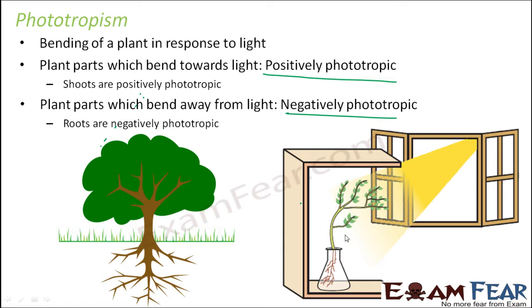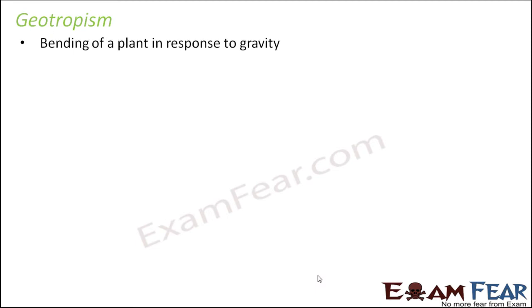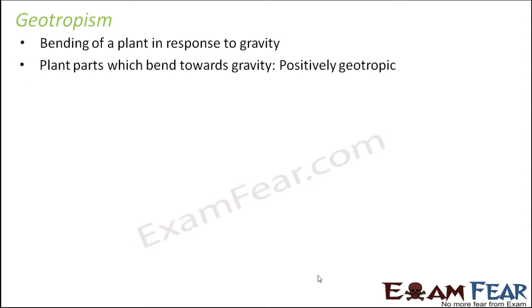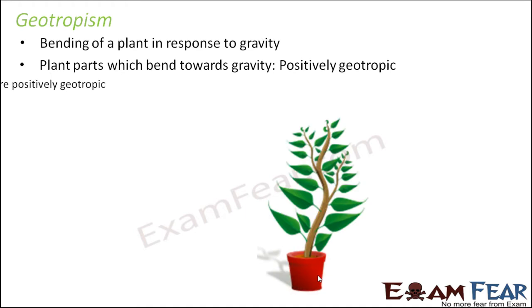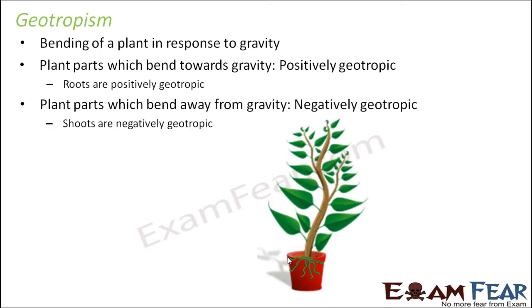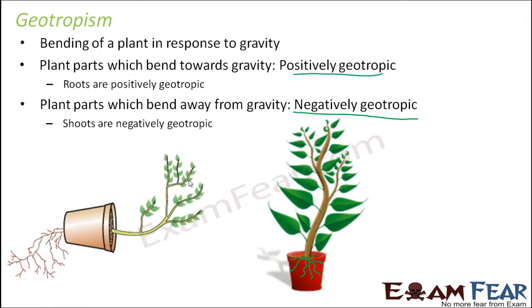For example, if you keep a plant near your window, light comes from that direction and the plant bends towards it. But if you look at the roots, they tend to go away from the direction of light. Geotropism is the bending of a plant in response to gravity. Roots tend to go towards gravity, so they are positively geotropic. Shoots bend away from gravity, so they are negatively geotropic. If you place a plant sideways, the roots will still bend downwards towards the earth and the shoot will grow in the opposite direction.